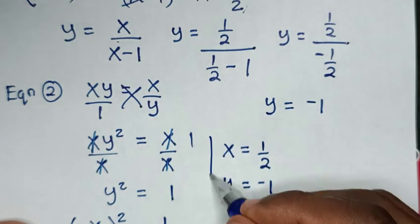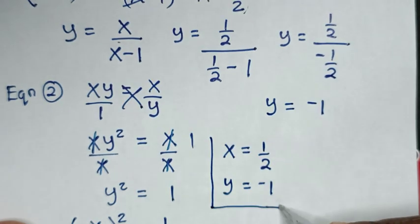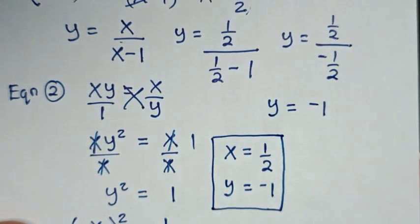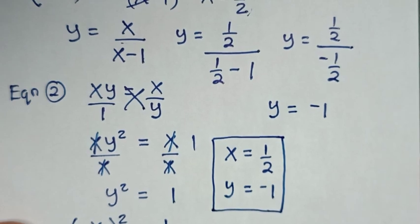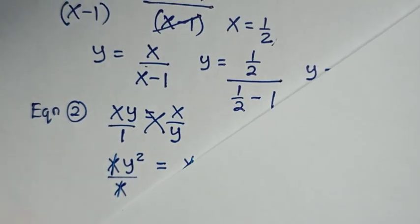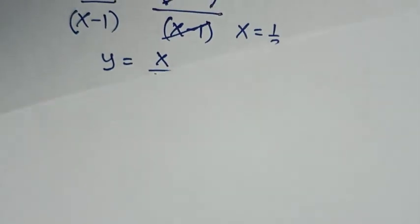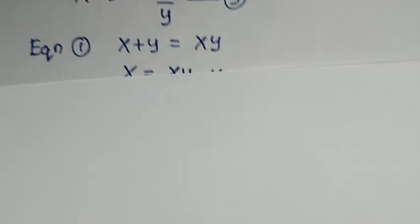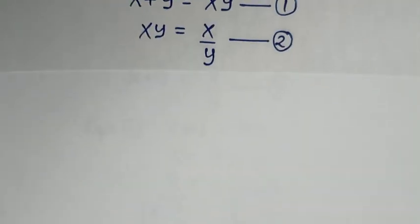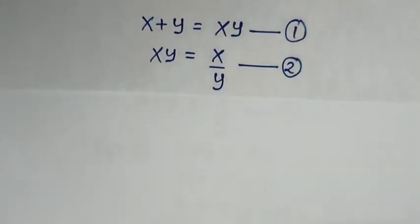So the final answer from method 1 is x equal to one half and y equal to negative 1. Alternatively, we can solve using another method, starting from equation 2.